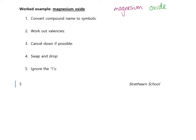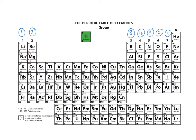The next example at the bottom of page five is magnesium oxide. Step one: convert the compound name to symbols. Magnesium has the symbol Mg. Oxide is just oxygen that has become a simple ion — because it's a non-metal it changes its ending to -ide — so we write O for oxygen. Step two: work out the valencies. Magnesium is in group two, so it has a valency of two. Oxygen is at the top of group six, so it also has a valency of two.